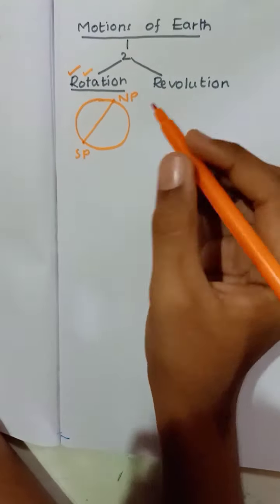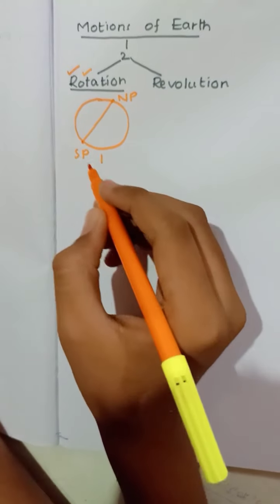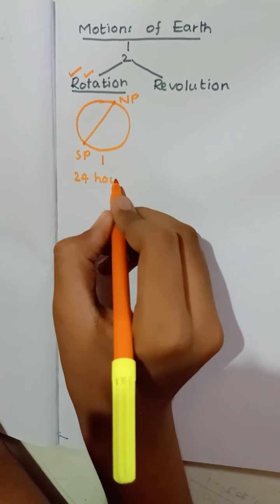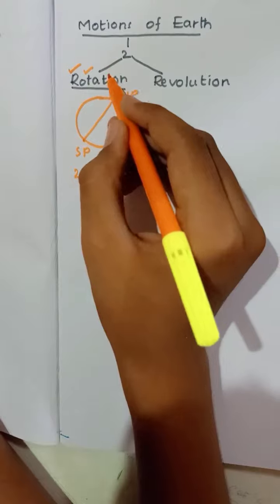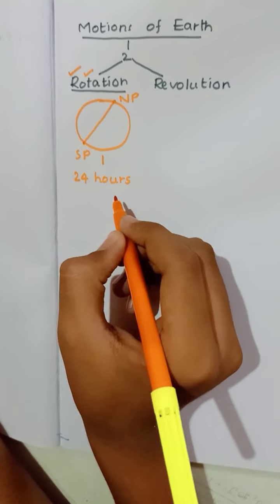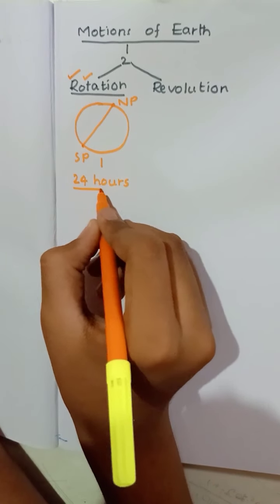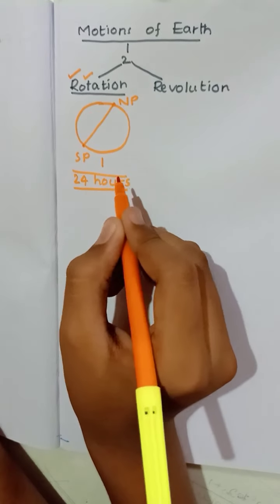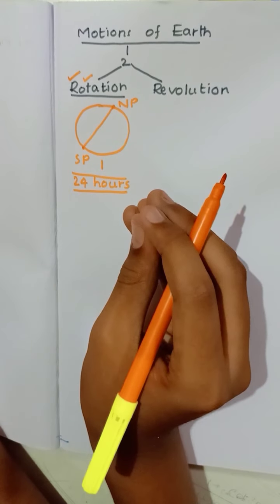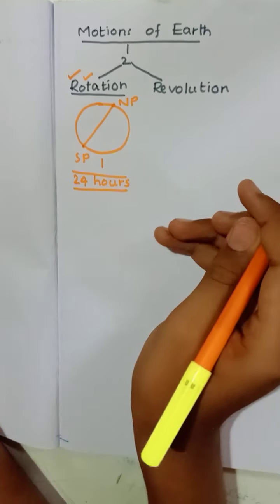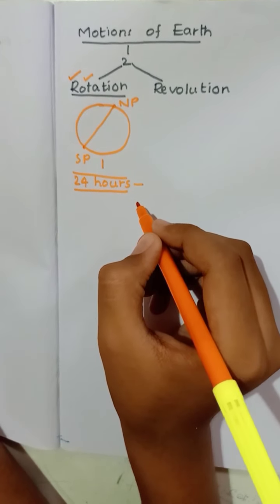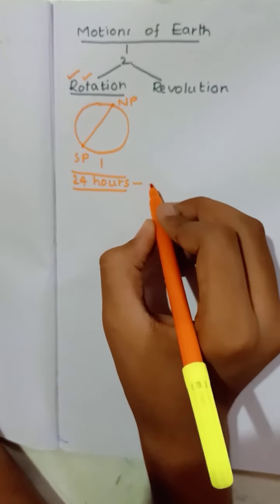The movement of the Earth on its own axis is called rotation. For one rotation, the Earth takes 24 hours. This timing of rotation will be different for different planets in the solar system.